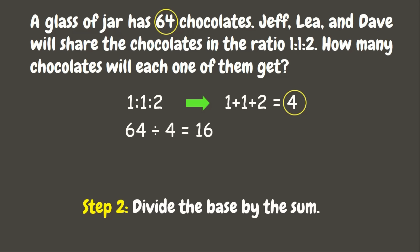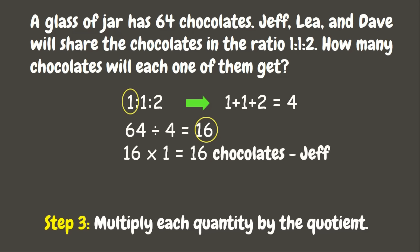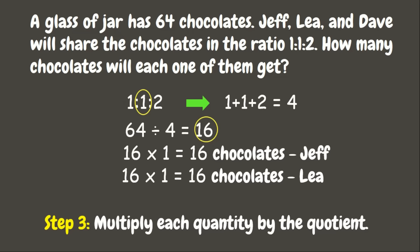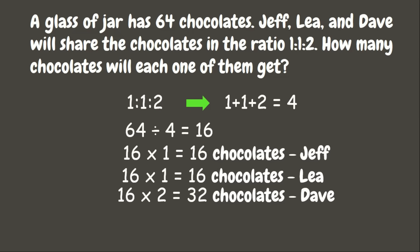64 divided by 4 is 16. For our final step, let's multiply each quantity by the quotient: 16 times 1 is 16 chocolates for Jeff; 16 times 1 is 16 chocolates for Leah; and 16 times 2 is 32 chocolates for Dave. Now let's check if our answer is correct: 16 plus 16 plus 32 is 64.